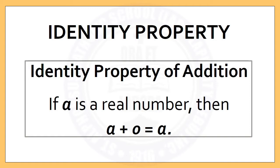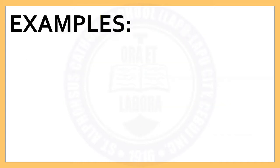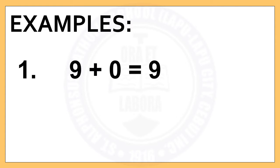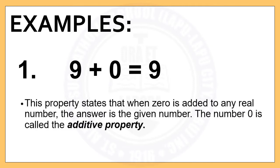First, Identity Property of Addition. This property states that if A is a real number, then A plus 0 is equal to A. Example Number 1: 9 plus 0 is equal to 9. This property states that when 0 is added to any real number, the answer is the given number.